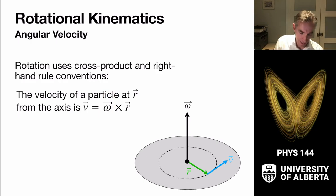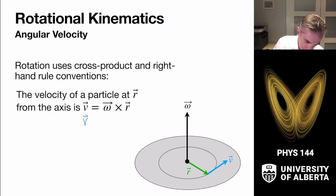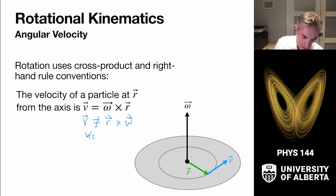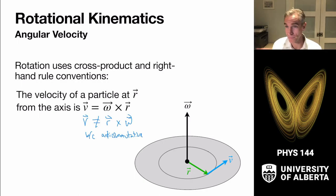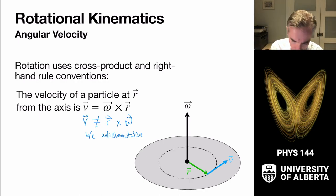Note that v as a vector does not equal r cross omega because the cross product is anticommutative — it does not go backwards and would point in the wrong direction. So it's always omega cross r for this.